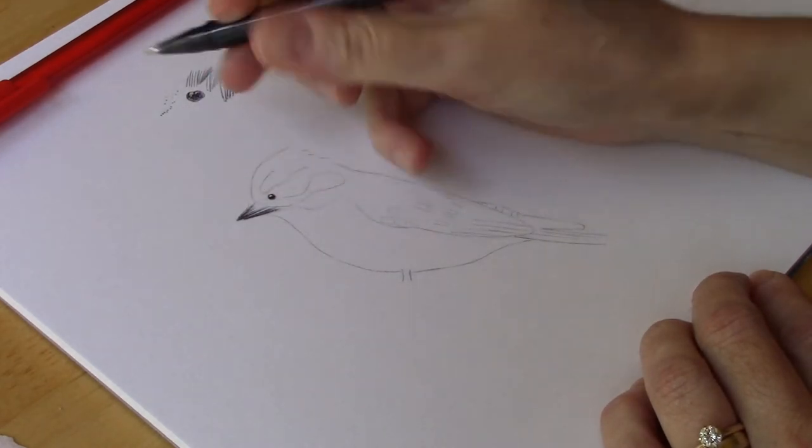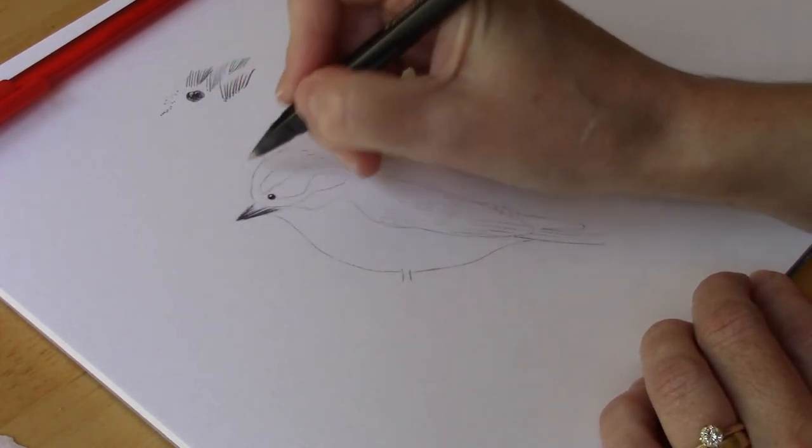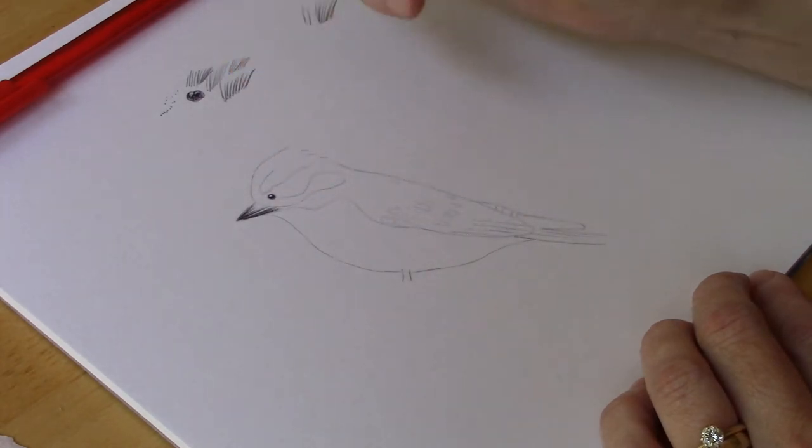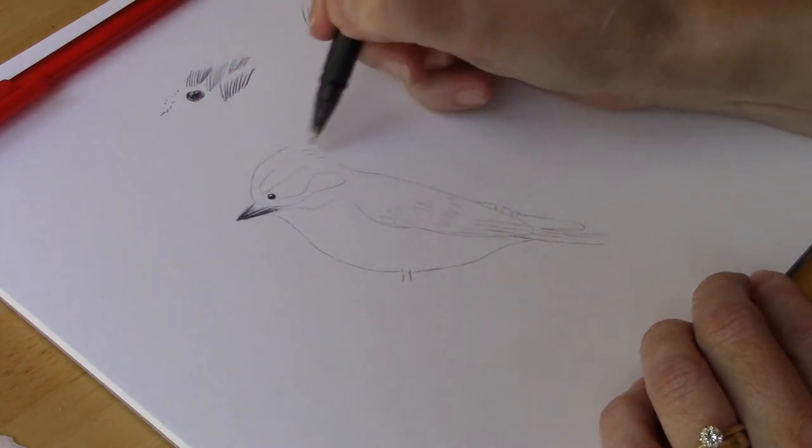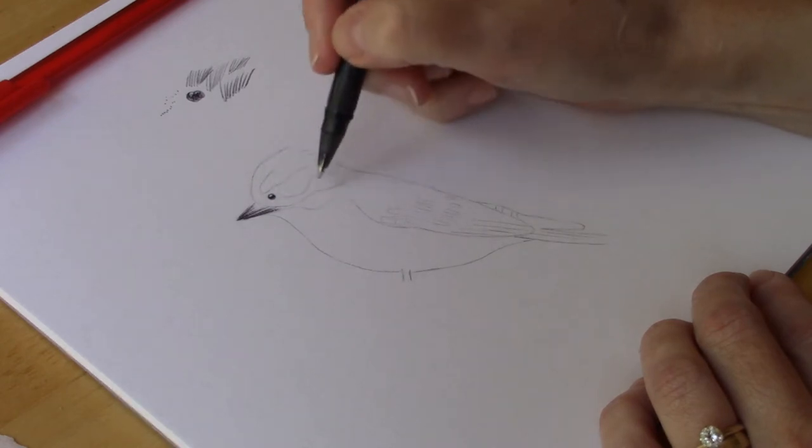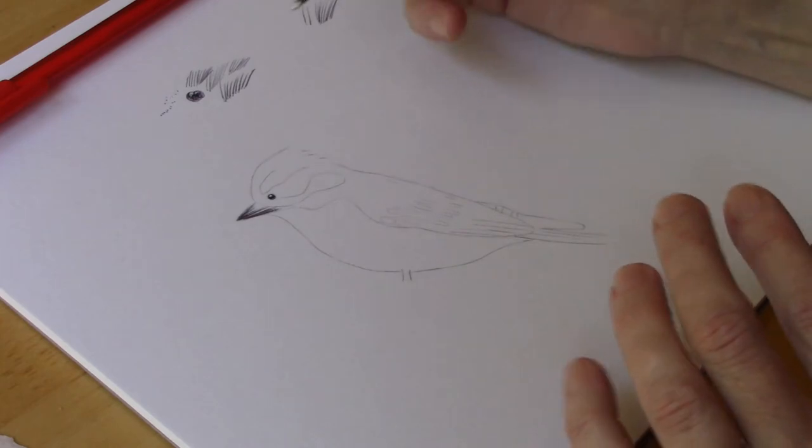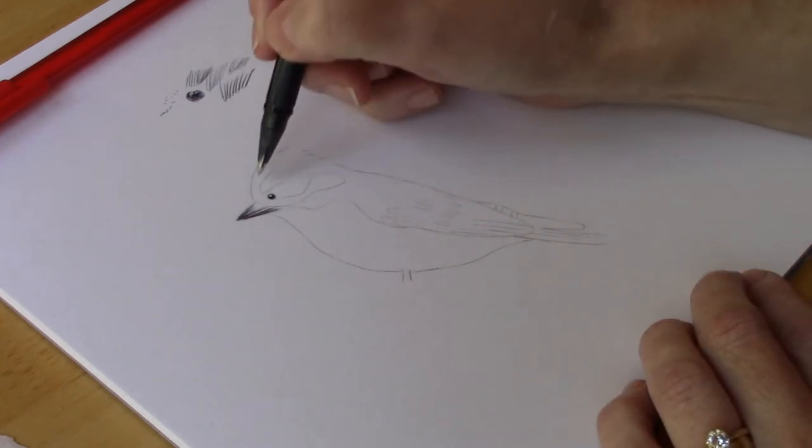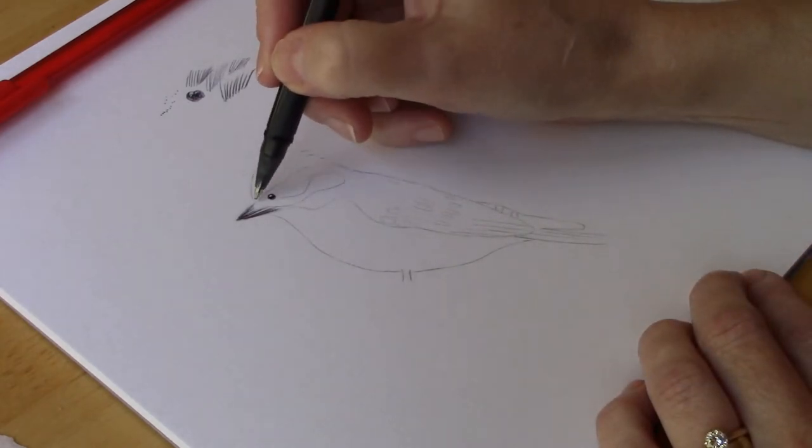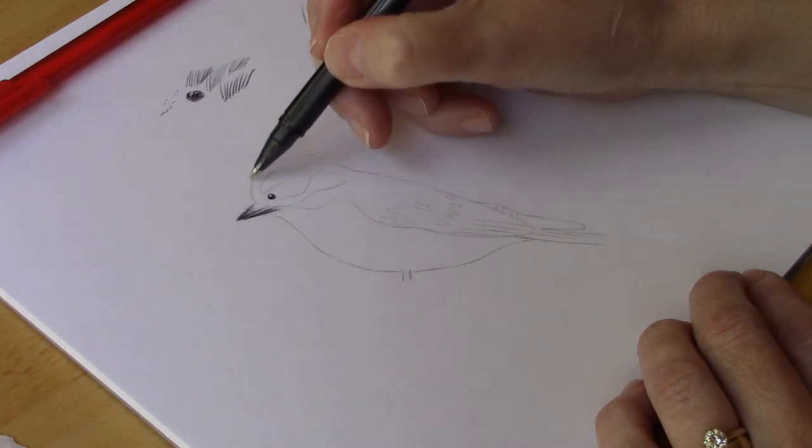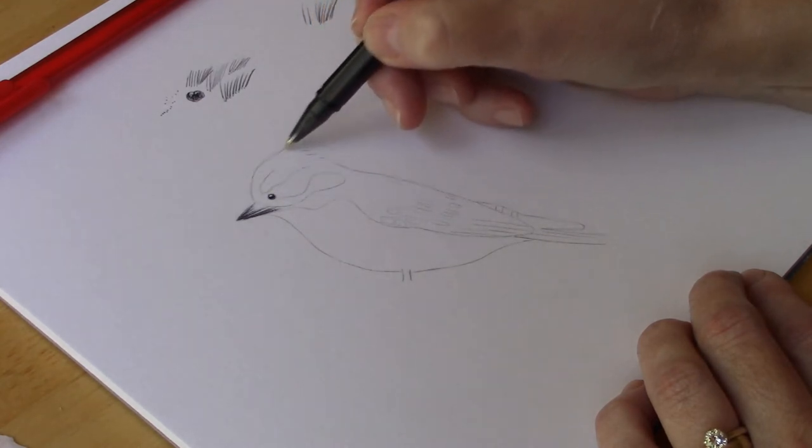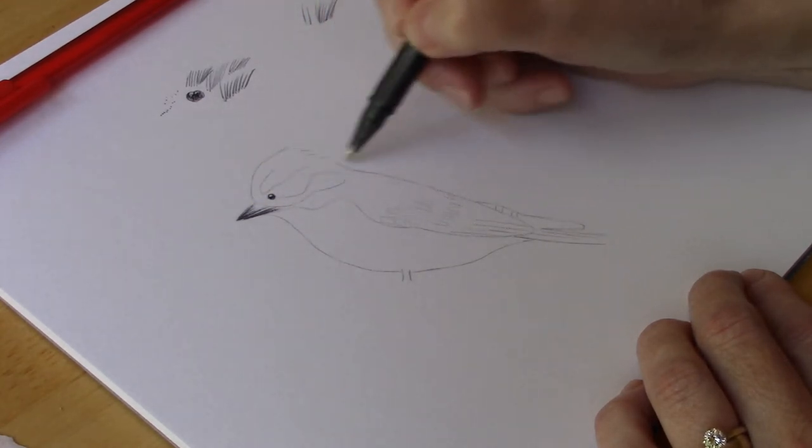So now that I have the eye and the beak, I'm going to start working on his little head. And you want to make your pen marks go in the direction that feathers, hair, or fur grow. So in our case, we have a bird, so we have feathers and his feathers start at his beak and they move to the back of his head. They all go to the back.